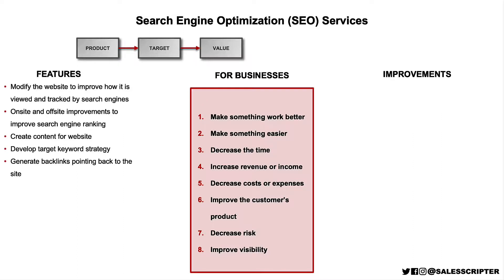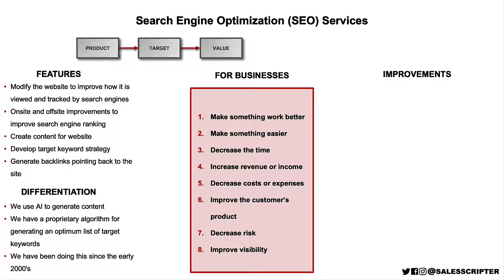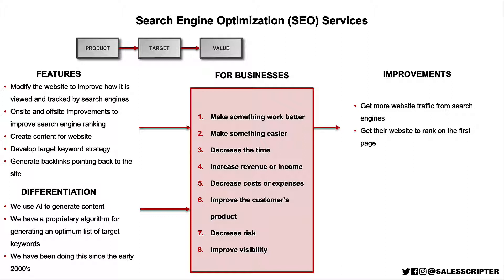A useful trick is to bring back the features and differentiation from the previous step and compare each one to the checklist points — does that feature help to make something work better, easier, decrease time, and so on? Going through each, we might come up with improvements for SEO such as: we help businesses get more website traffic from search engines, get their website to rank on the first page of search engine results, increase the leads they generate online, and decrease the time businesses spend on working to improve their search engine optimization.